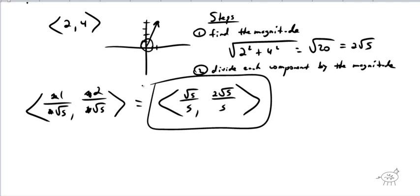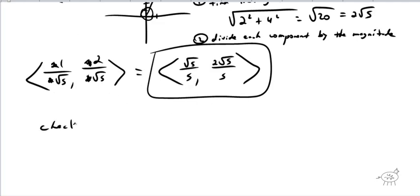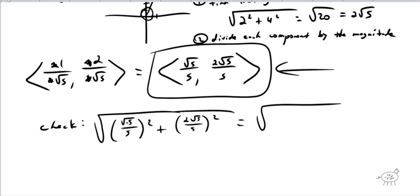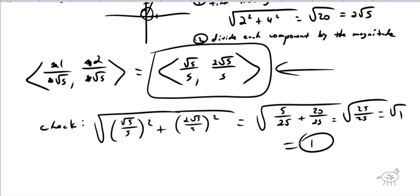Some of you are wondering how we know the magnitude is only 1. Just to check — not something you have to do — but if I find the magnitude of that unit vector using the Pythagorean theorem: (√5/5)² + (2√5/5)². √5² is 5, and 5² is 25, so that's 5 over 25. And (2√5)² is 4 times 5 = 20, over 25. So we get the square root of 25 over 25, which is the square root of 1, which is 1. That confirms I created a vector with a magnitude of 1.